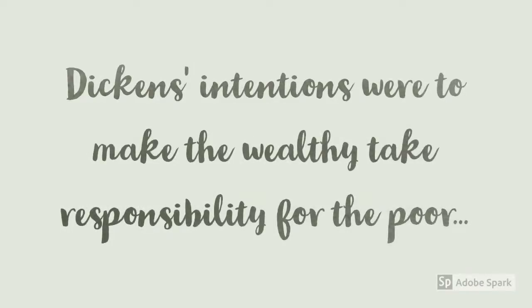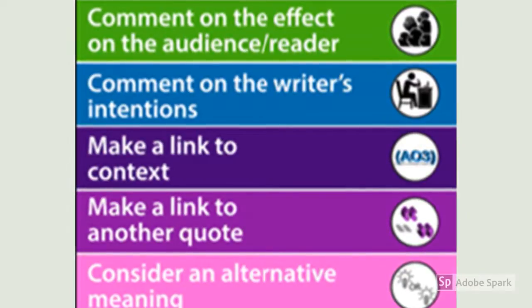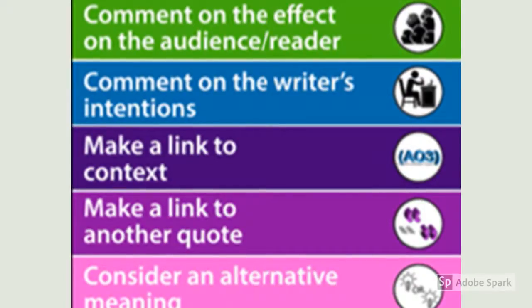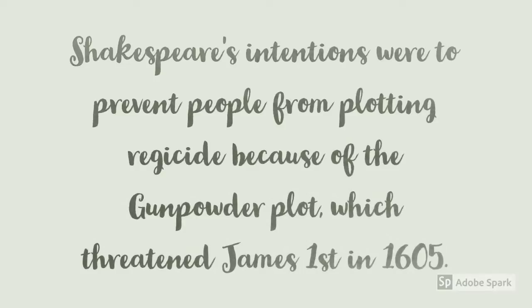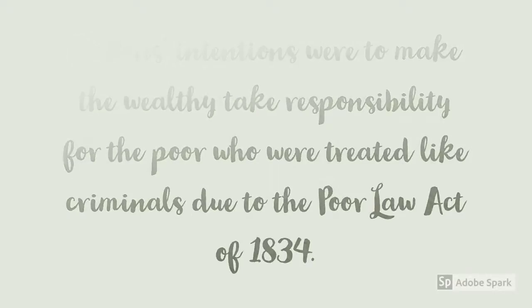The next strategy links to the one above: make a link to context. Context is anything that links to societal attitudes, beliefs, and ideals within a set time period, and important historical events that could have influenced a writer. For example: 'Shakespeare's intentions were to prevent people from plotting regicide because of the Gunpowder Plot, which threatened James the First in 1605.' Similarly: 'Dickens' intentions were to make the wealthy take responsibility for the poor, who were treated like criminals due to the Poor Law Act of 1834.' This proves to the examiner that pupils are aware of important societal beliefs and historical events that helped shape the writing.